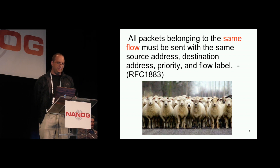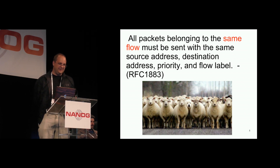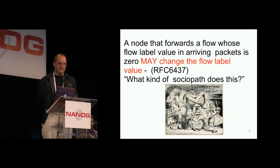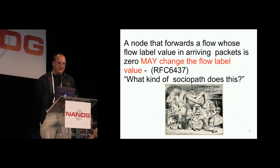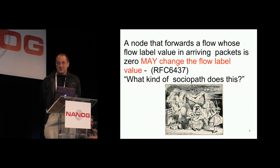RFC 1883 is pretty unequivocal: all packets in the same flow must be sent with the same source address, destination address, priority, and flow label. That's pretty clear. Unfortunately we didn't exactly stick with that. Around 2011 we came out with an effort to rehabilitate the flow label, and we said a node that forwards a flow whose flow label value in arriving packets is zero may change the flow label.